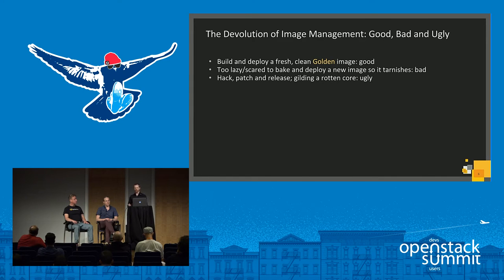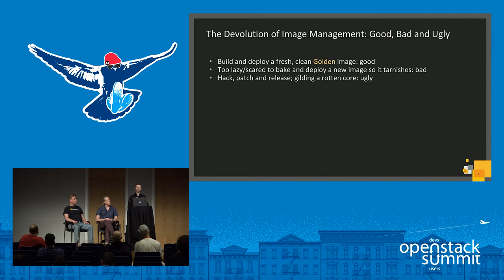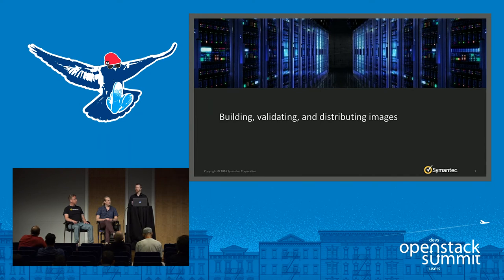We all do some form of image management, but often it looks very ugly. In the beginning we build some good images, deploy them into VMs, and here we have golden images. But either through being too lazy or too scared to create a new image, vulnerabilities and new bugs are discovered in the running VMs — they tarnish, and that gets us into a bad situation. What often happens is just the hack, patch, and release, where you release a new image but don't push it directly to the running VMs. So those running VMs are still out there with tons of vulnerabilities — that's an ugly situation to be in.